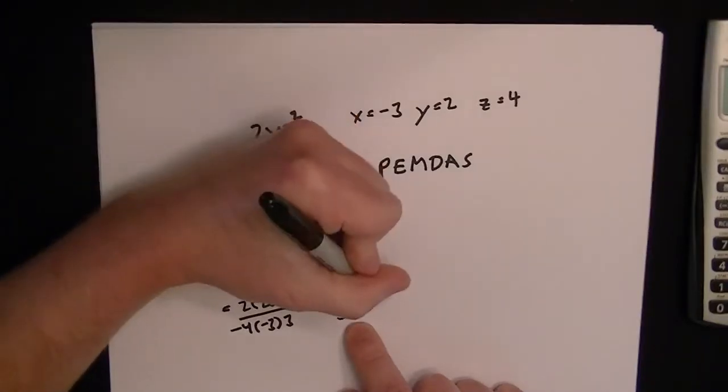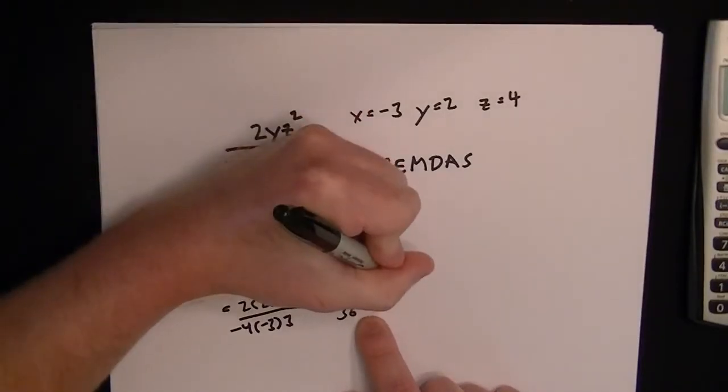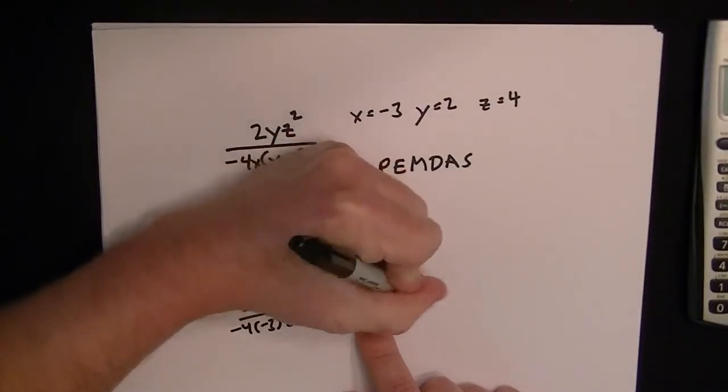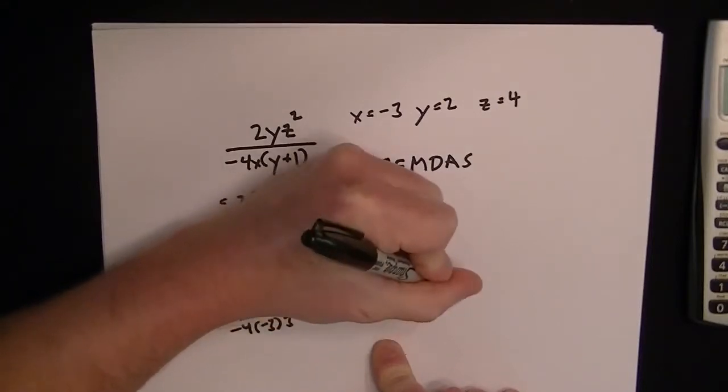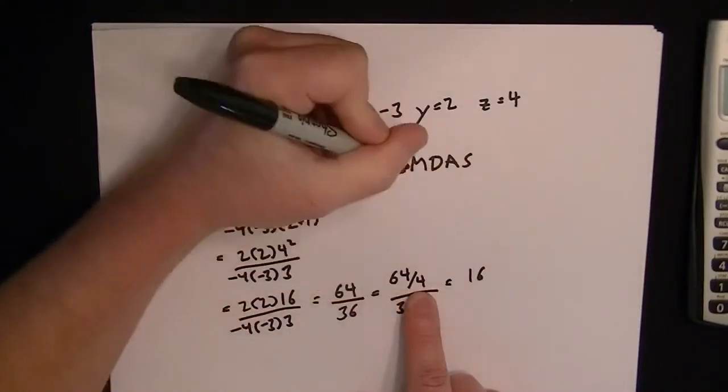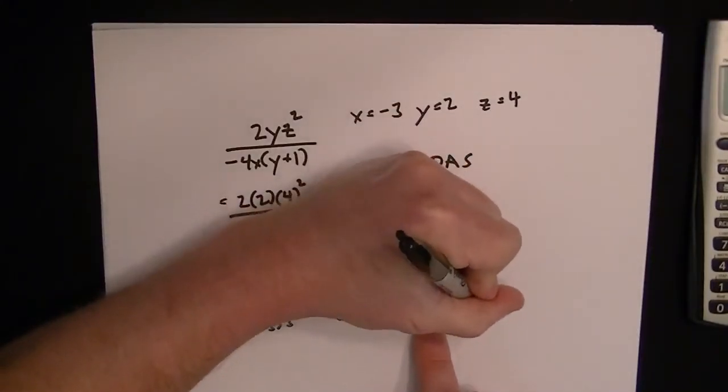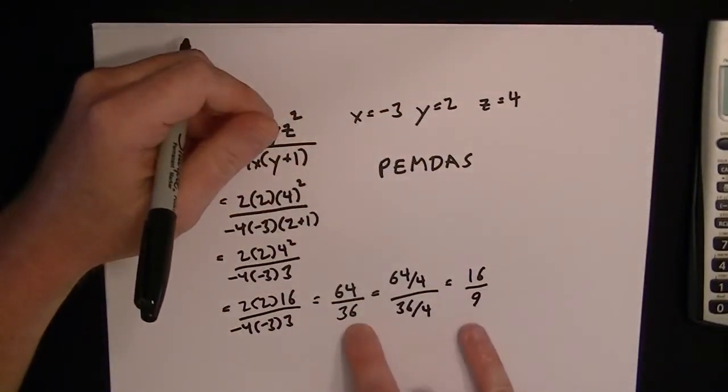So the fraction that you end up with is 64 over 36. But you can simplify that by looking at this and realizing you can divide each the bottom and top by 4 to get a simpler fraction. So if we take 64 divided by 4, that gives me 16. And 36 divided by 4 is 9. So that's just a simplified version of 64 over 36.